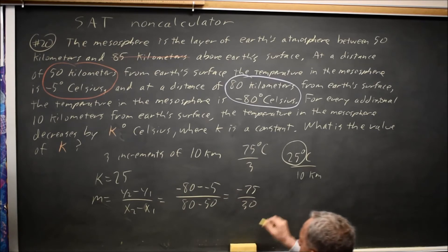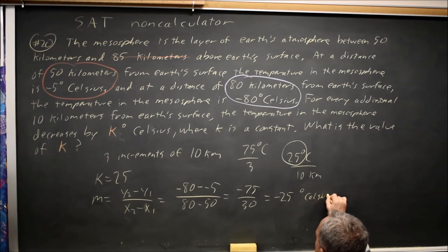Which is negative 2.5 degrees Celsius per 1 kilometer. But they want 10 kilometers, so multiply that by 10, and you get negative 25 degrees Celsius per 10 kilometers.